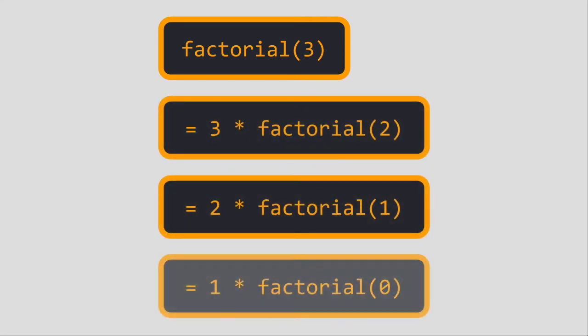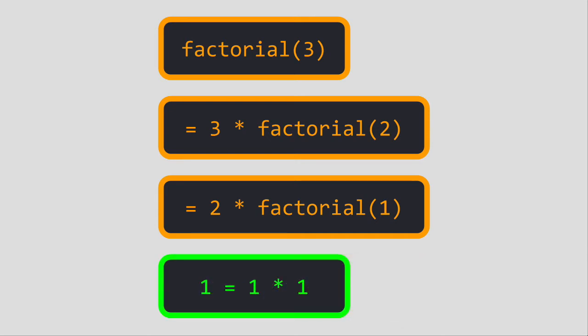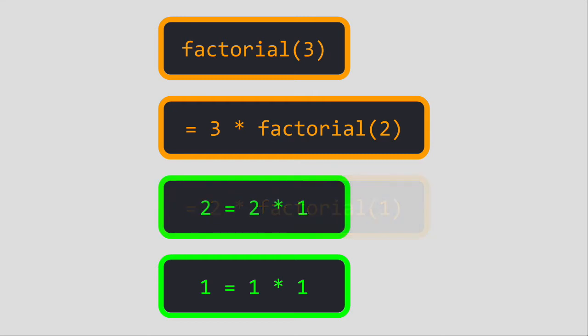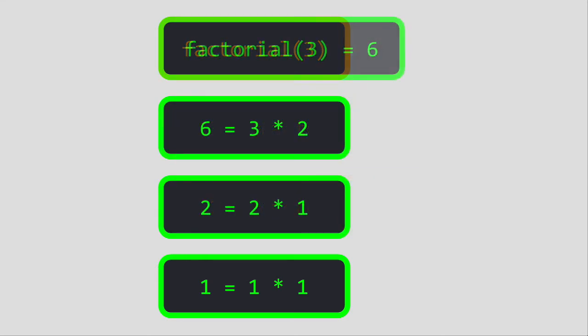Eventually, the function will stop calling itself. When the function reaches its base case, it will return a value for every function call. The return values of those function calls will be rolled into one large return value.